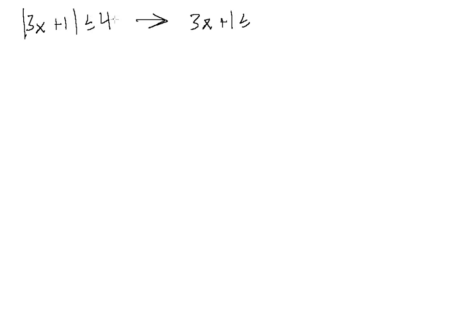It's going to be less than or equal to positive 4, and we want the values of x where 3x plus 1 is greater than or equal to minus 4. We want all the values of x where this expression has a distance of no more than 4 — less than or equal to 4 steps from 0. Alright, so let's go ahead and solve these.